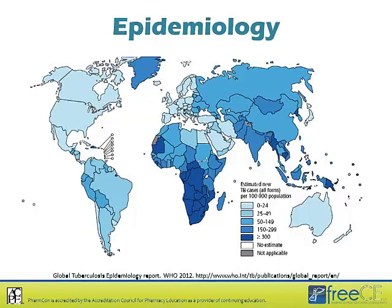To start our discussion, talking about the epidemiology and understanding where tuberculosis is most prevalent is certainly very important. Taking a quick look at this map, the key is located in the lower right-hand corner. It estimates new TB cases of all forms per 100,000 population. The lightest blue shaded regions have zero to 24 cases per 100,000 population. The areas with the greatest risk are those in the darkest blue color — parts of Africa and Asia — with risk estimates greater than or equal to 300 cases per 100,000 population.